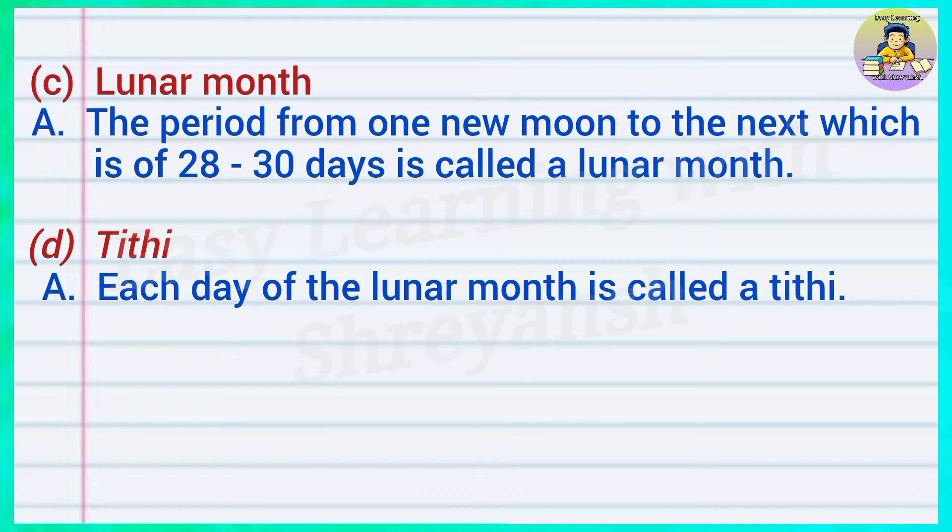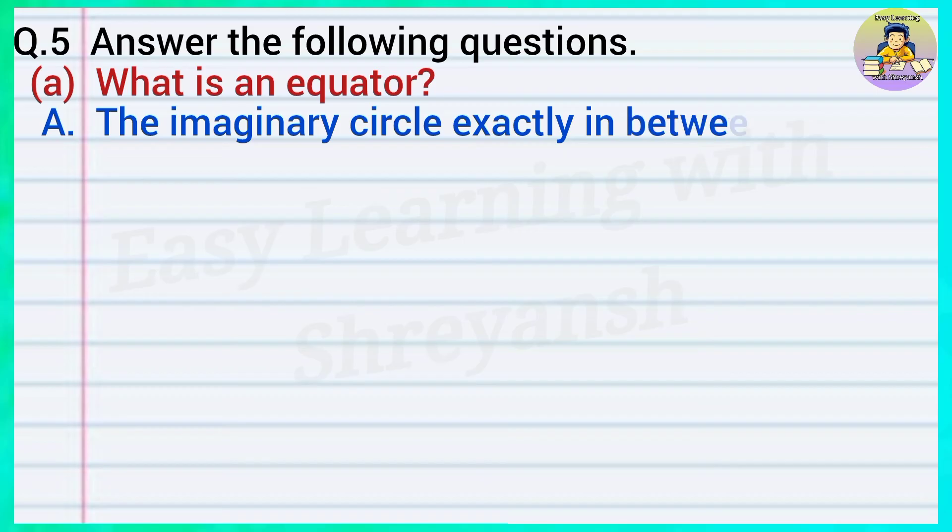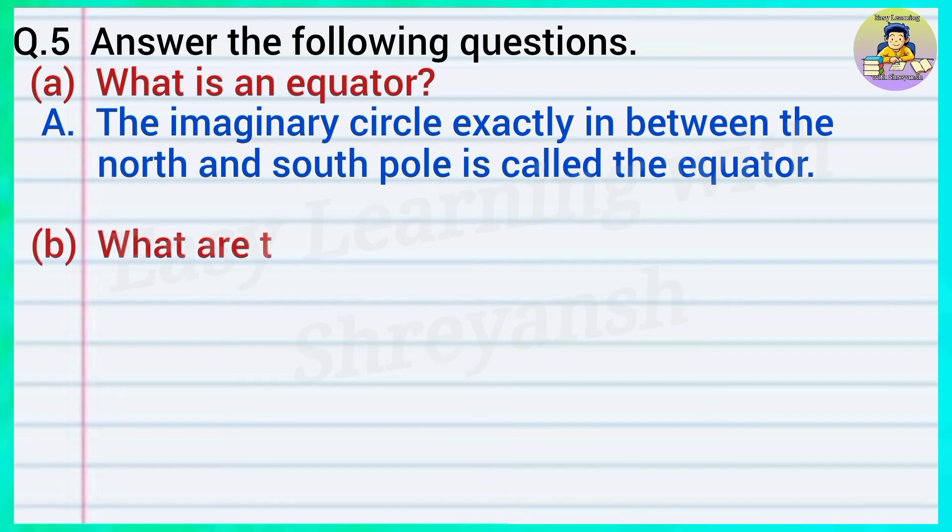Question number 5: Answer the following questions. A) What is an equator? Answer: The imaginary circle exactly in between the North and South Pole is called the equator. B) What are the two parts of the Earth made by the equator?